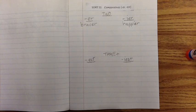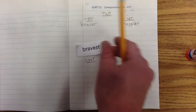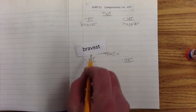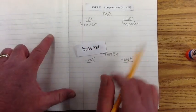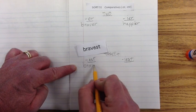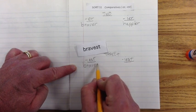Let's go down to some words that will require E-S-T. And again, these are words that are comparing three or more things. Okay. So, here we have bravest. Kind of like up here we have braver. We're comparing two, but this is bravest. So, I'm going to write B-R-A-V.